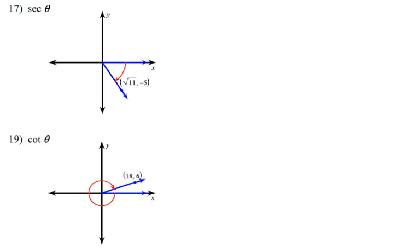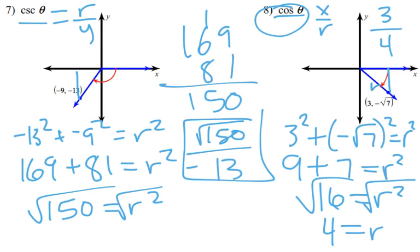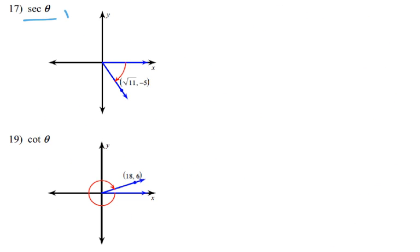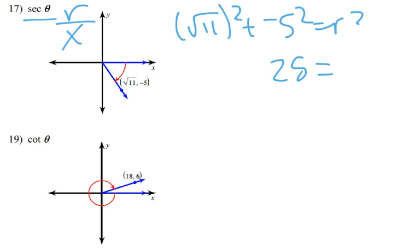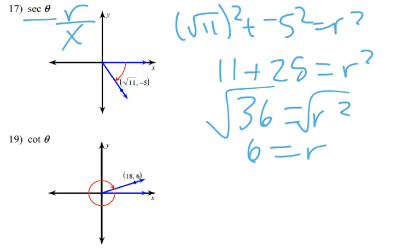Okay. Now, secant and cotangent. So, secant is the opposite, remember, of cosine. So, instead of x over r, it's r over x. Okay? So, we need to find r again. So, square root of 11 squared plus negative 5 squared equals r squared. So, we get 25 plus 11. So, 36 equals r squared. Take the square root. And, we get 6 equals r.